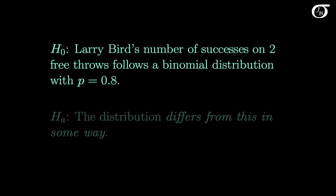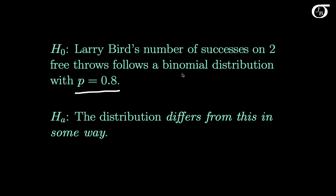We're going to test the null hypothesis that Larry Bird's number of successes on two free throws follows a binomial distribution with a probability of success of 0.8. The alternative hypothesis is that the null hypothesis is wrong — that the distribution of the number of successes differs in some way. That could mean the binomial distribution is reasonable but the probability of success is not, or it could mean the binomial distribution itself is not reasonable — for example, the independence assumption might be violated.